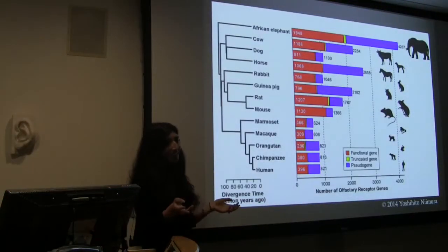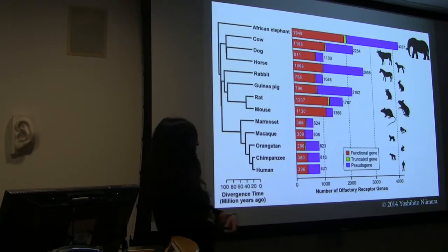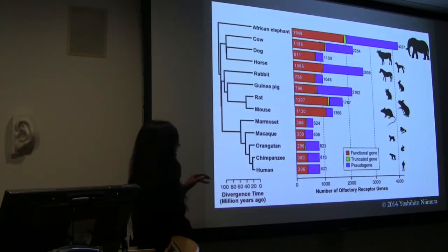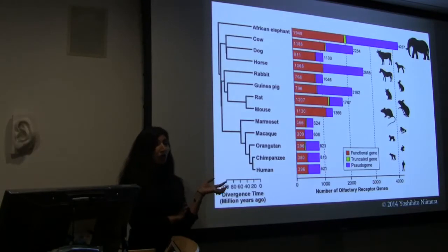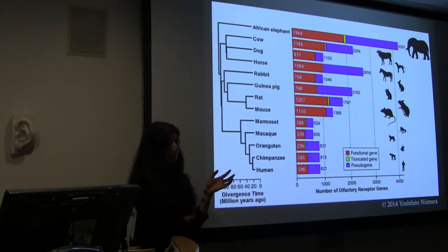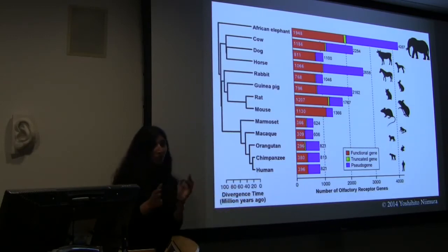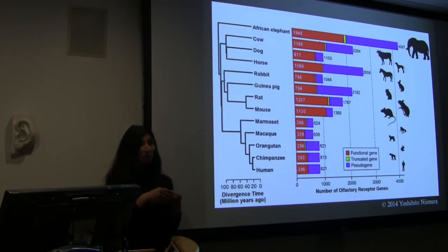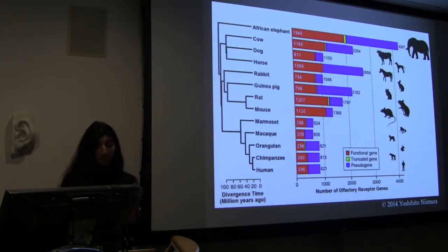This slide basically shows you the number of olfactory receptor genes in all these different species, and you can see humans have close to a thousand different olfactory receptor genes. That is an incredibly large amount of genes dedicated to just smelling things. To give you some perspective, that means 5% of all your genes — 1 in 20 — is dedicated to smelling odors. That's more genes than are dedicated to our immune system. Perhaps it is a clue as to how important and primal our olfactory system is to us.